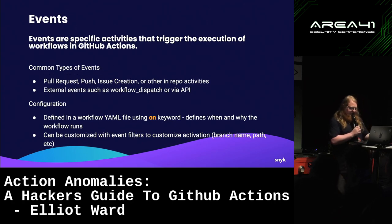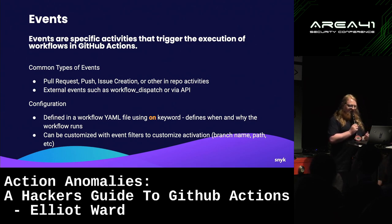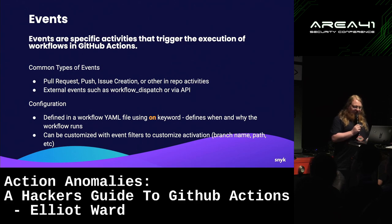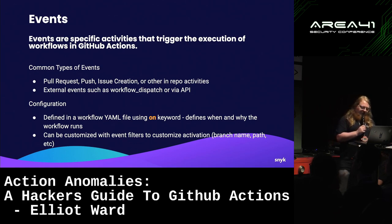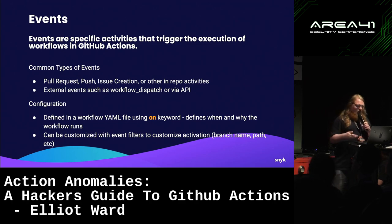Events are specific activities that trigger execution of workflows. Common event types you'll encounter when looking to exploit or defend will be pull requests, pushes, issue creation, and other in-repo activities. External events are facilitated by workflow_dispatch or via the GitHub API. Events are configured inside the workflow YAML using the `on` keyword, which defines when and where the workflow will run. This can be customized with event filters to, for example, only run if the branch matches or only if files within a specific directory have changed.